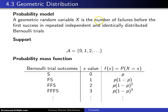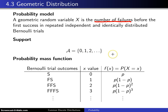If you are counting the number of failures before the first success, your support for a geometric random variable will start at 0, 1, 2, and go off to infinity.